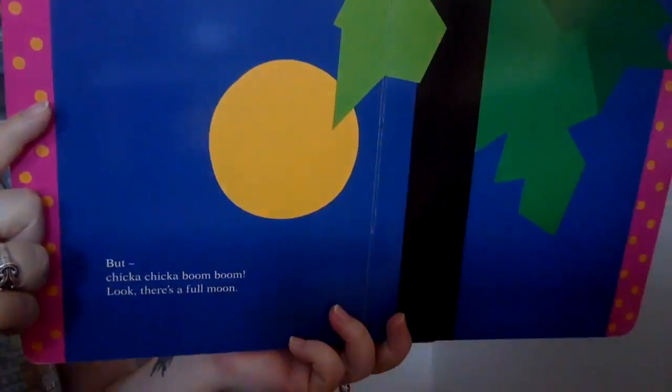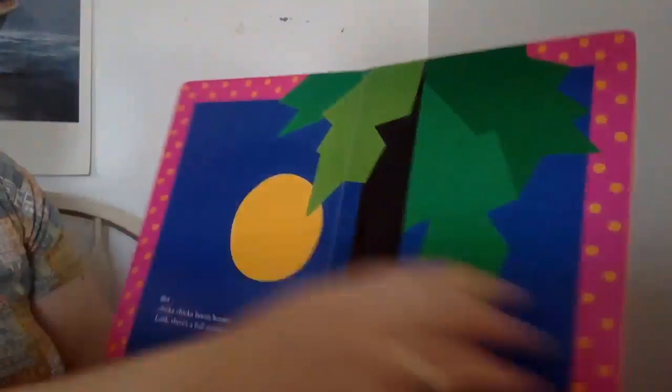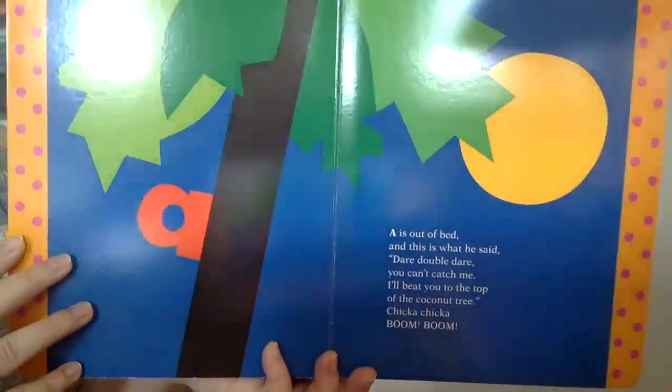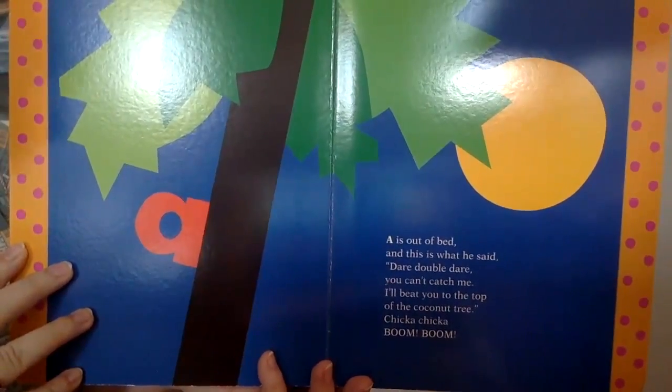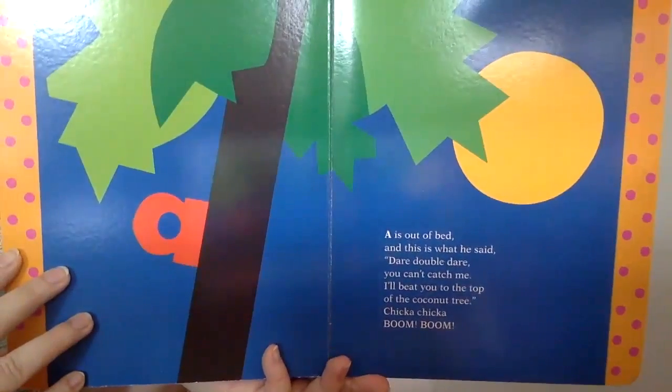But Chicka Chicka Boom Boom, look, there's a full moon. A is out of bed, and this is what he said. Dare, double dare, you can't catch me. I'll beat you to the top of the coconut tree. Chicka Chicka Boom Boom.